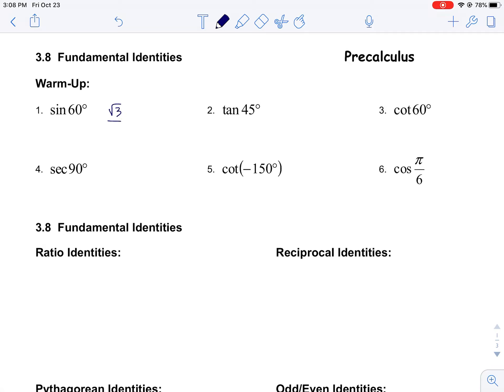The sine of 60° of course is root 3 over 2. The tangent of 45° is 1.